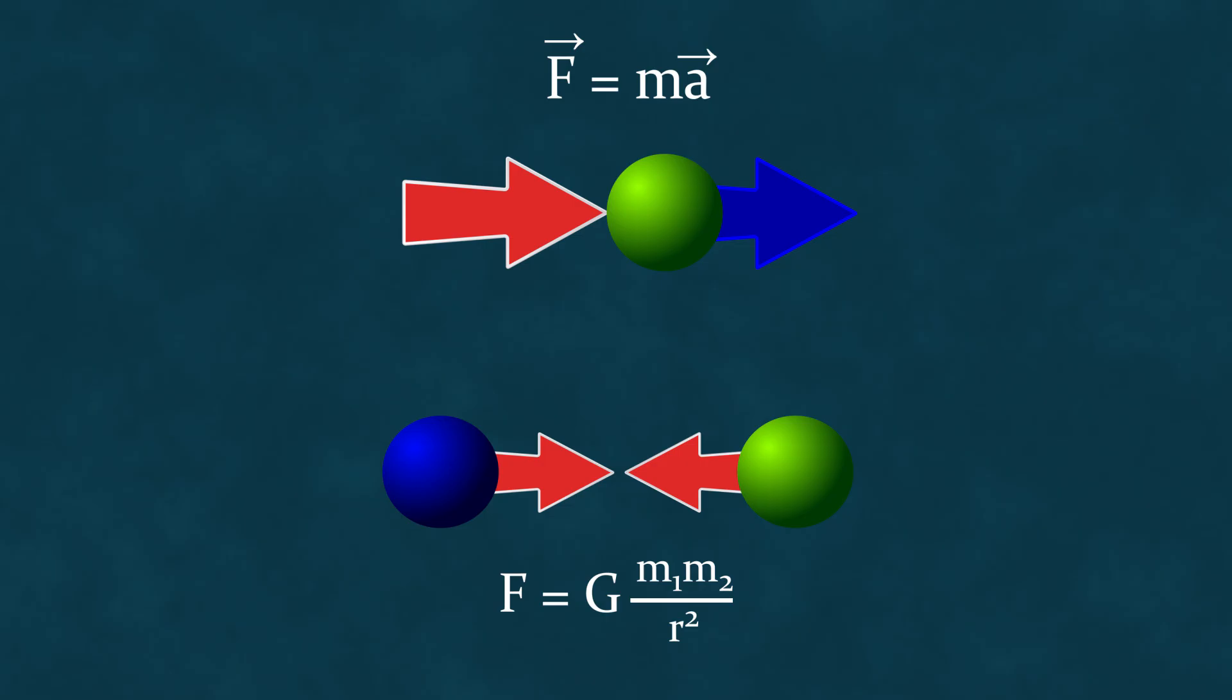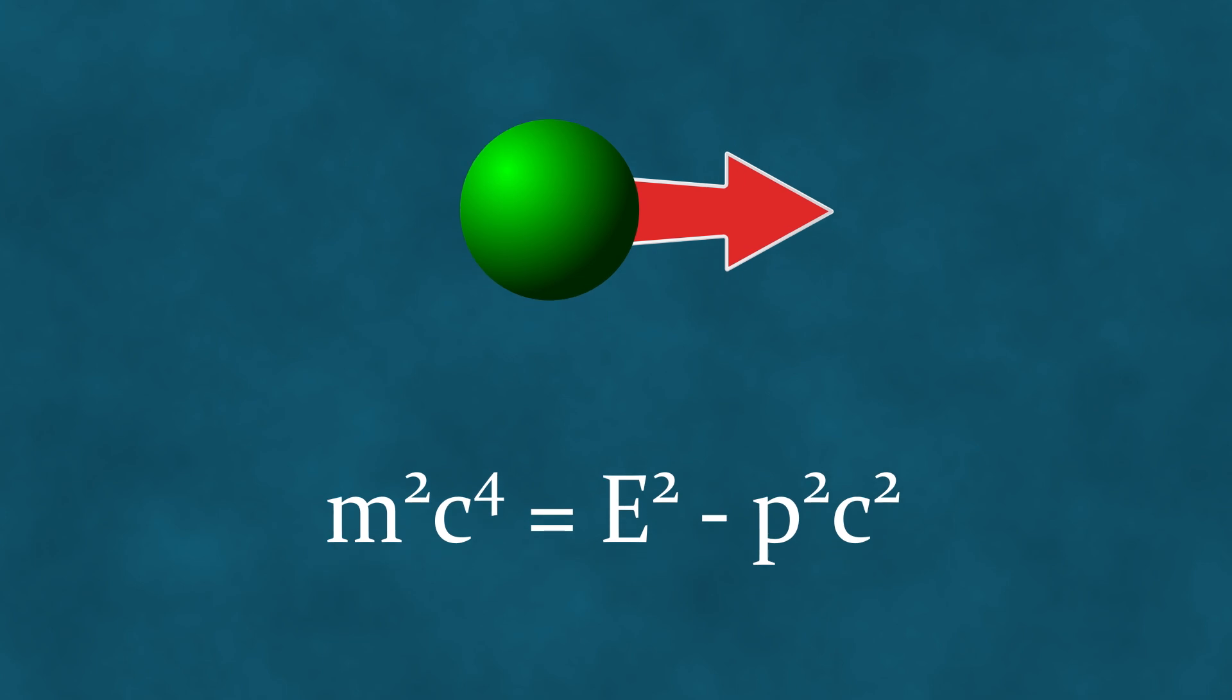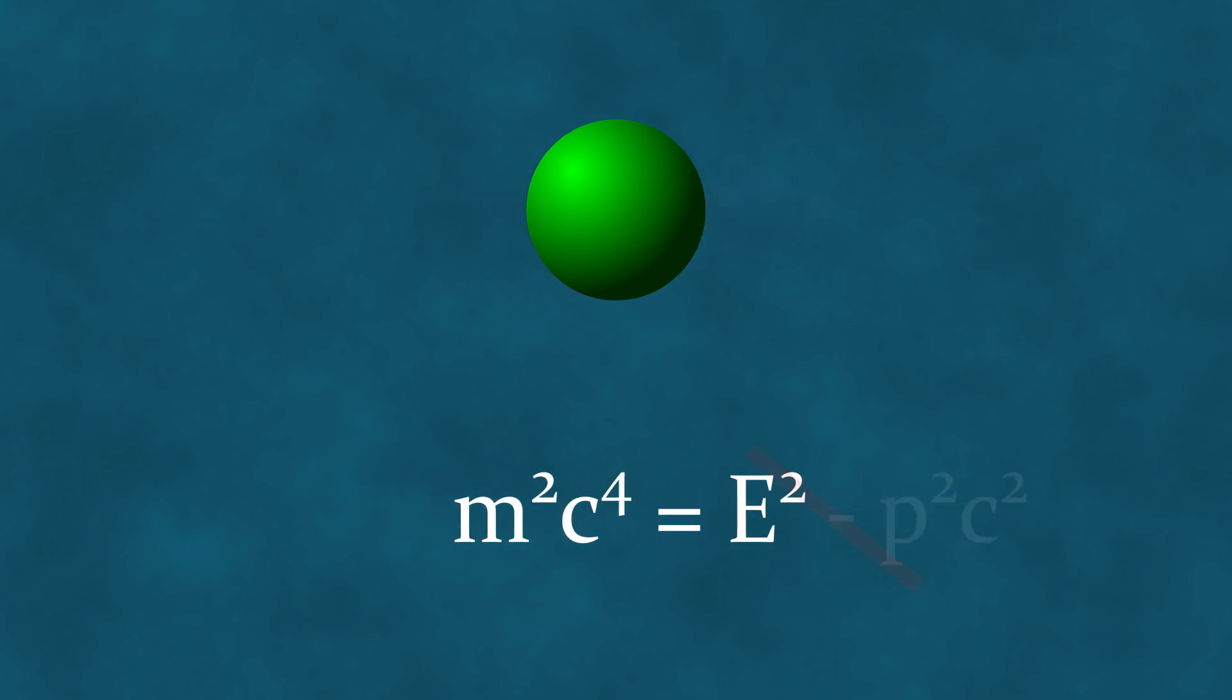But if none of the classical definitions of mass are applicable in relativistic mechanics, then what is mass from the perspective of the theory of relativity? In relativity, mass is understood as a quantity that links the energy and momentum of a particle according to a formula like this. In fact, E equals MC squared is merely a special case of this formula for the situation when the system's momentum is zero.